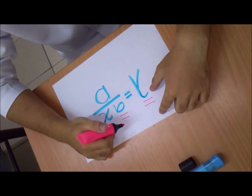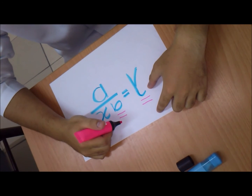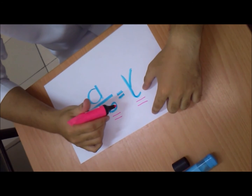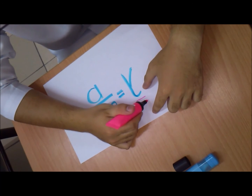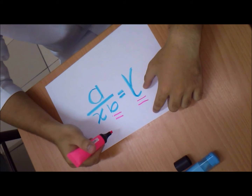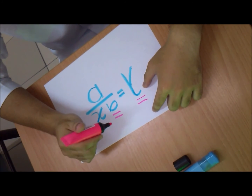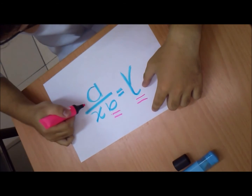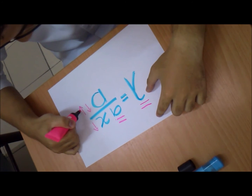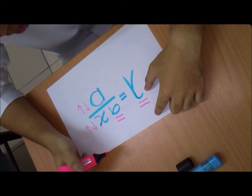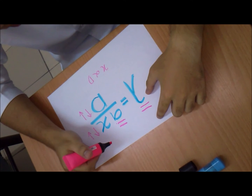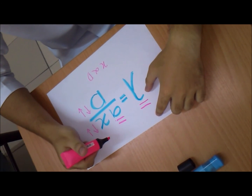We will now compare the result with Young's double-slit formula. The formula is: lambda equals a times x over d. As we know, the wavelength of the laser beam and the distance between the slits remain constant. So x and d will vary. From the equation, as d increases, x also increases, meaning x is directly proportional to d. Thus, the result proves that Young's double-slit formula is verified.